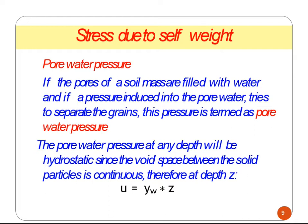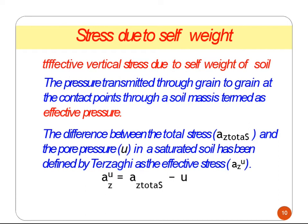The pore water pressure at any depth will be hydrostatic, since the void space between the solid particles is continuous. So pore water pressure u = γw × Z, where γw is the unit weight of water multiplied by the depth of the water table. The effective vertical stress is the pressure transmitted grain to grain at the contact points through the soil mass. The difference between the total stress and the pore pressure in saturated soil has been defined by Terzaghi as effective stress.